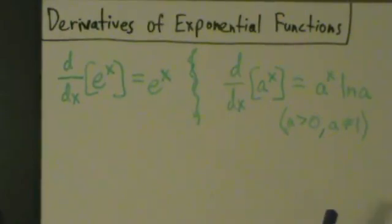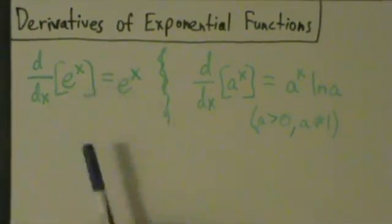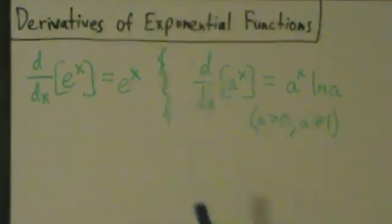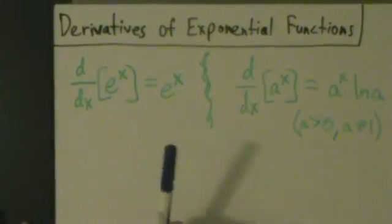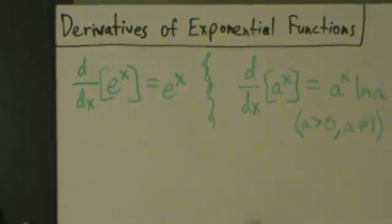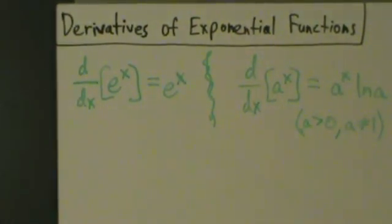But anyway, what we're going to do is show this one here, and then this one will be pretty quick to show after that. These are actually both pretty quick, but what's incredibly fascinating is that the derivative of e to the x is just e to the x.